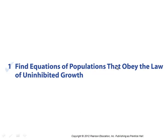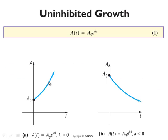The law of uninhibited growth uses the exponential function where you have an initial quantity A₀ times e raised to some constant k times variable t. If k is positive, you have exponential growth. If k is negative, then you have what we call decay — the quantity of stuff is going to be decreasing with time according to this model.